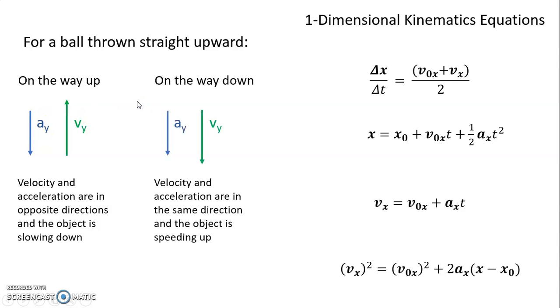As the ball comes back downward, the acceleration is still downward, but now the velocity is downward as well. The size of that vector will be changing—it'll be increasing with time—but the acceleration is staying the same. So now velocity and acceleration are both downward, and the object is speeding up.